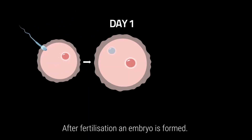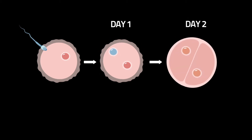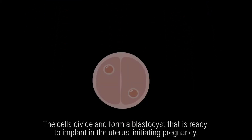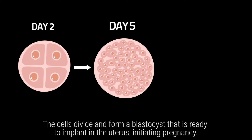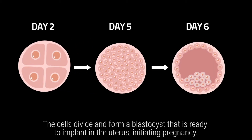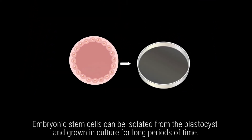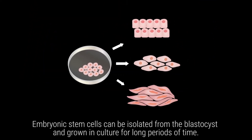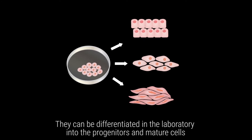After fertilization, an embryo is formed. The cells divide and form a blastocyst that is ready to implant in the uterus, initiating pregnancy. Embryonic stem cells can be isolated from the blastocyst and grown in culture for long periods of time.